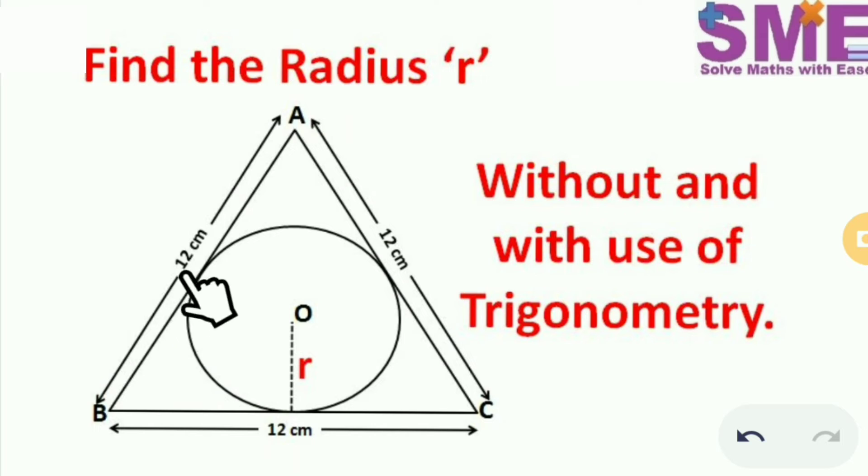Each side of this equilateral triangle touches the circumference of this circle. So we need to find the radius of this inscribed circle without and with use of trigonometry.